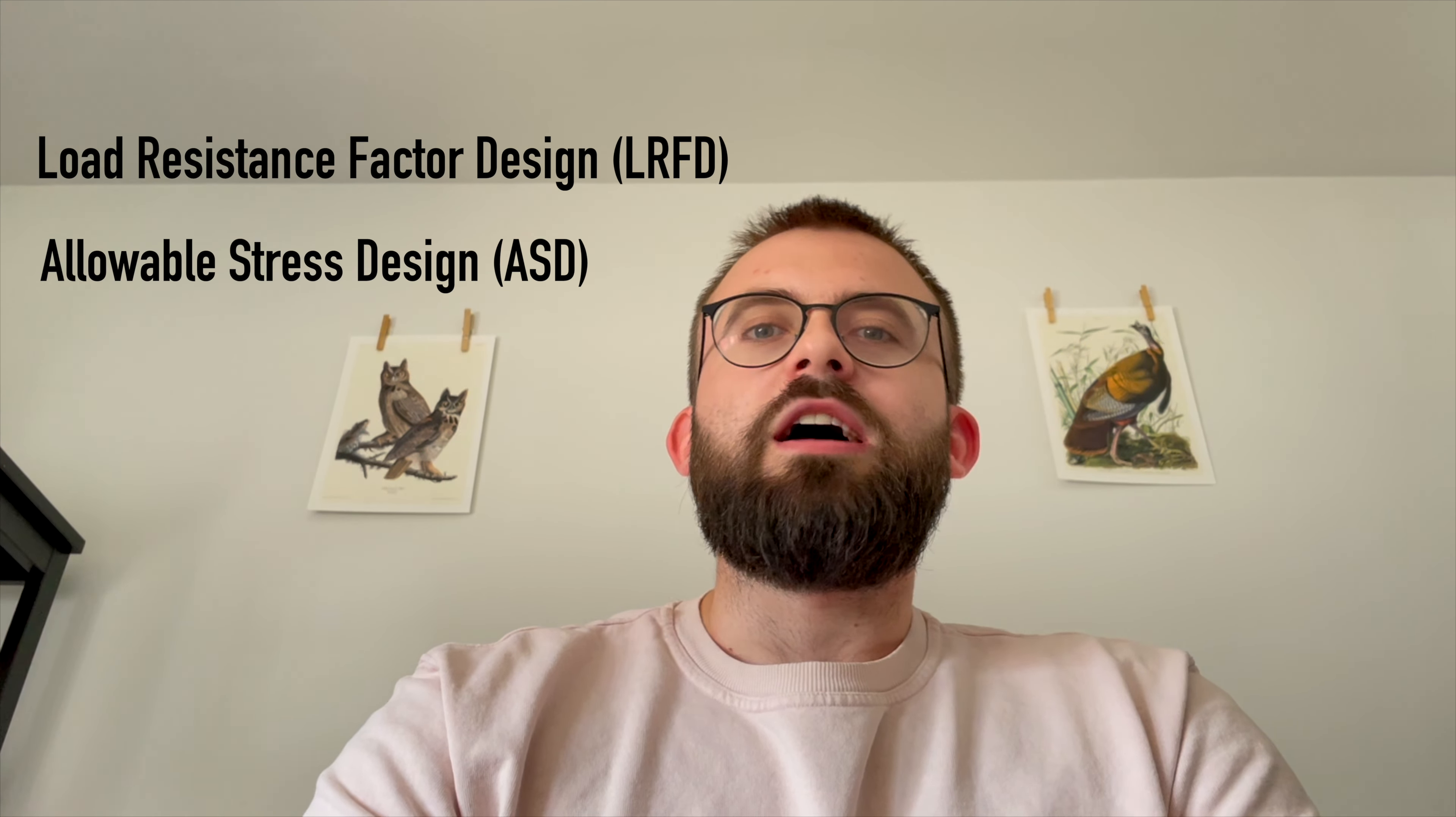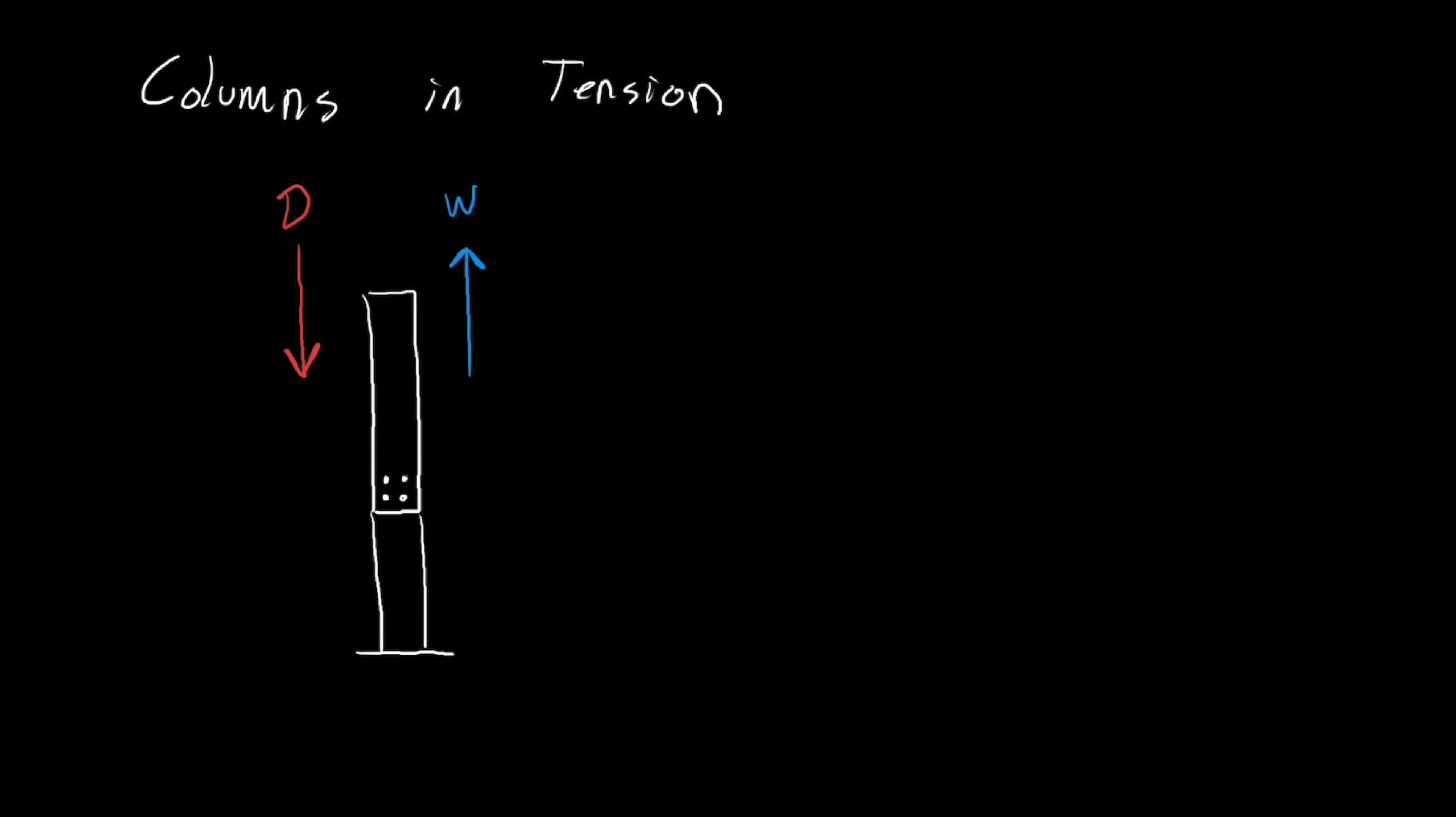For columns and tension, there's a load combination where you take the tension due to the wind force and subtract out 75% of the compression from the dead load, but his engineers were arguing that the braces functionally acted more like diagonals in a truss, so that load combination could be ignored and the full dead load could be subtracted out.